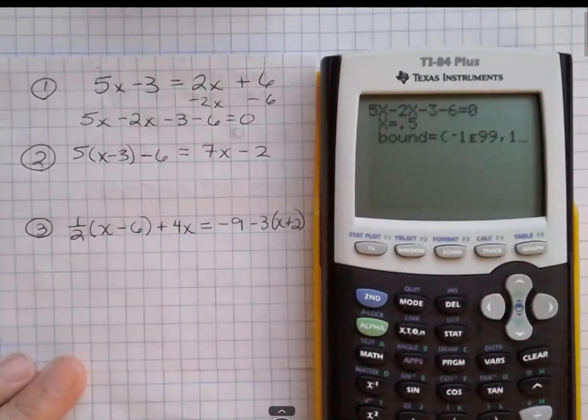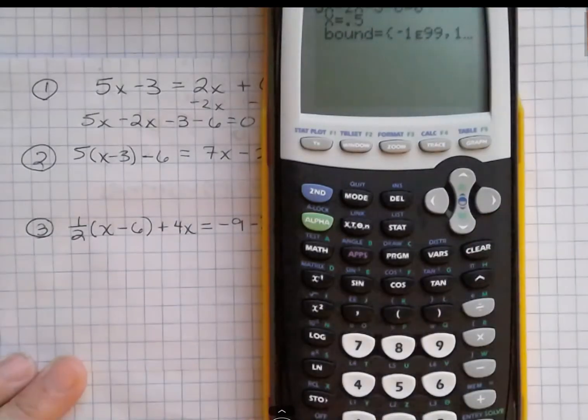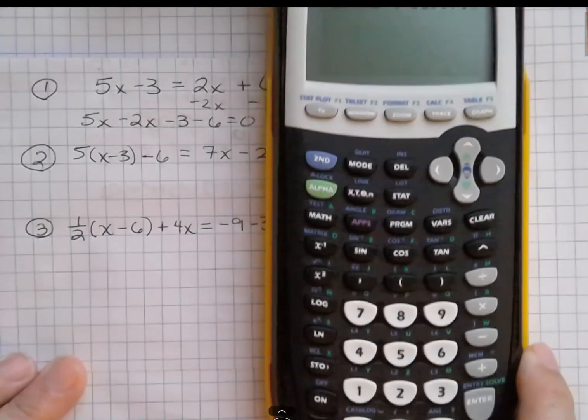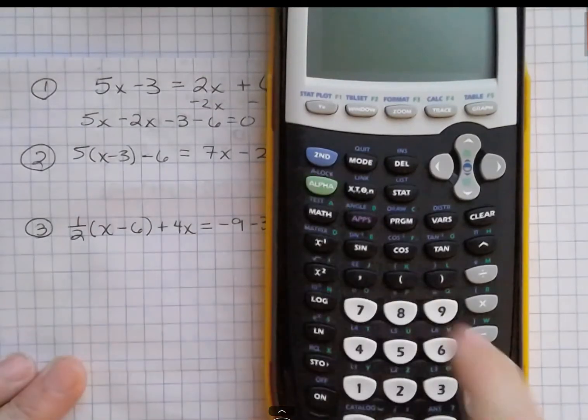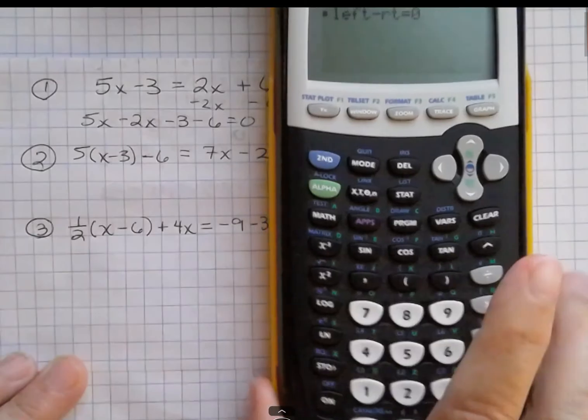Now we've just entered it, and now to solve it, we're going to get to that green solve button that I mentioned before, and to get there, we're going to click on the green button alpha, and then the solve button down here, which is enter.